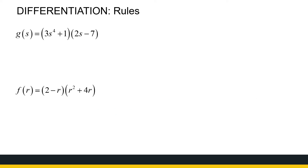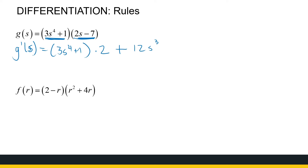Here I've got a function — the product of two polynomials. The product rule tells us the derivative is the first one times the derivative of the second one. The derivative of (2s minus 7) is 2. Plus the derivative of the first one, which is 12s cubed, times the second one, (2s minus 7). I swapped the order of multiplication here — it doesn't matter. The first times the derivative of the second, plus the derivative of the first times the second.